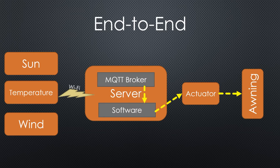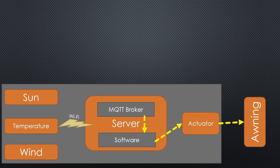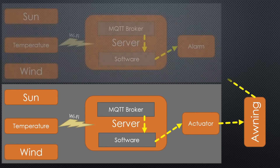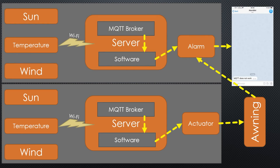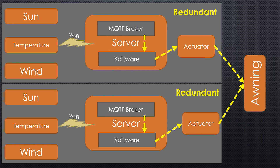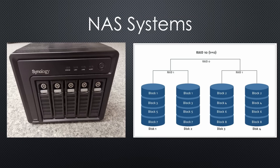If we want to supervise this system end-to-end, we have to compare the three parameters with the awning position, which means we need a second system in parallel as a supervisor. Or we build the same system in parallel, which takes over if the first fails — like in airplanes. This is called redundancy. NAS systems, for example, often use RAID controllers for that purpose, using additional disks which are only needed in case of a primary disk failure.